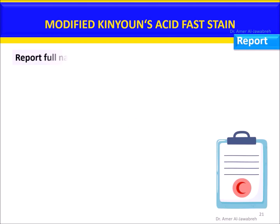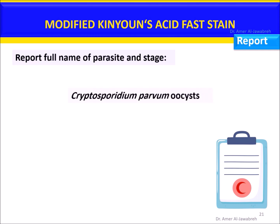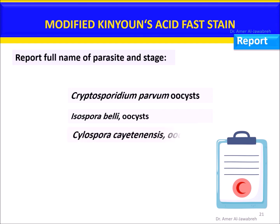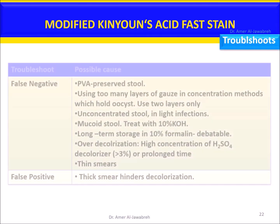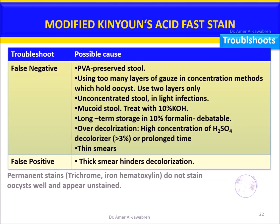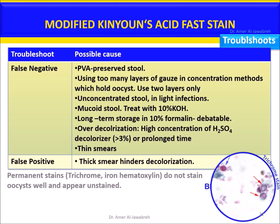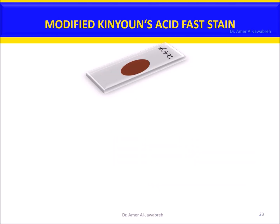Report the full name of the parasite and stage, such as Cryptosporidium parvum oocyst, Isospora belli oocyst, or Cyclospora cayetanensis oocyst. Troubleshooting table shows possible causes for staining issues. Note: permanent stains such as trichrome do not stain Coccidia well, and oocysts appear unstained.